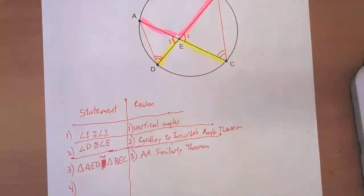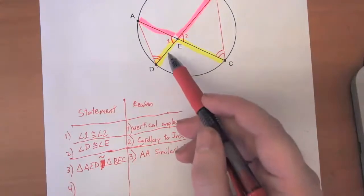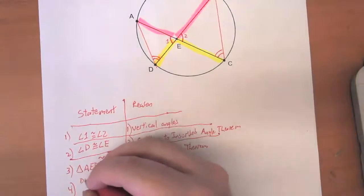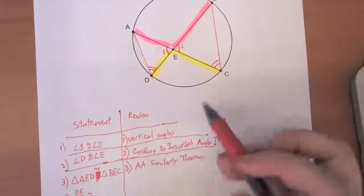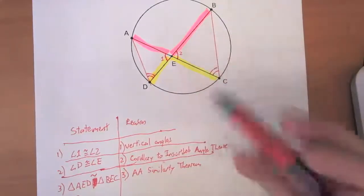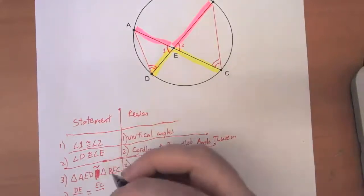There are a couple different ways you can write it, but the idea is, let me say that the yellow side is to the pink side in this triangle, so that's DE is to AE, in the same proportion that the yellow side is to the pink side in this triangle, so EC is to EB.